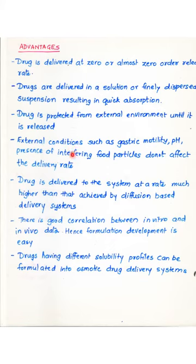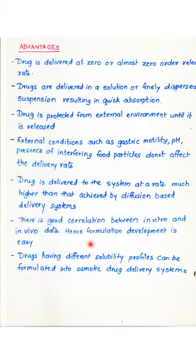The delivery rate is not affected by external conditions of the GI tract such as gastric motility, pH, or presence of interfering food particles. These systems deliver the drug to the system at relatively elevated rates — much higher than the rates of diffusion-based delivery systems. There is a very good correlation between in-vitro and in-vivo data, hence formulation development is easy. Drugs having different solubility profiles, from slightly soluble to highly soluble, can be incorporated in these delivery systems and formulated to deliver the drug at a constant rate irrespective of solubility characteristics.